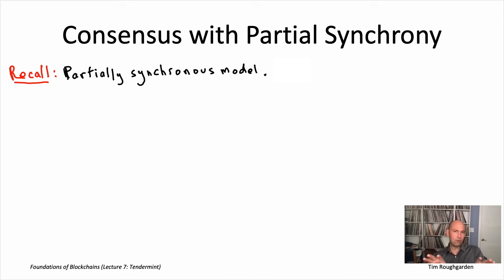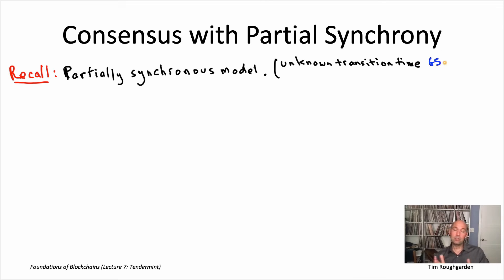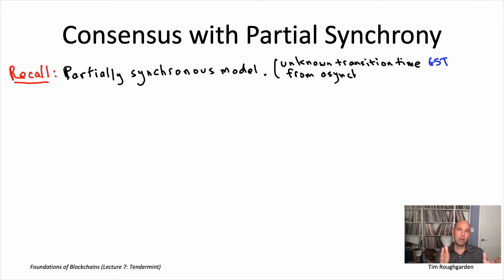It's a two-phase model. We start with an asynchronous phase — we start under attack, in effect. But attacks should eventually end, and we capture that with this notion of a global stabilization time, or GST. That's a transition time which is unknown a priori; it has to happen sometime, but we have no idea when — a transition from the asynchronous model to the synchronous model.